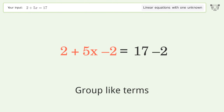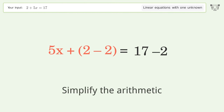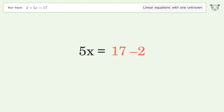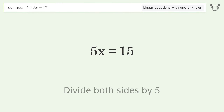Group like terms. Simplify the arithmetic. Isolate the x — divide both sides by 5.